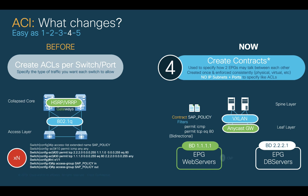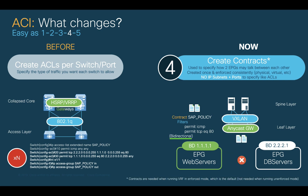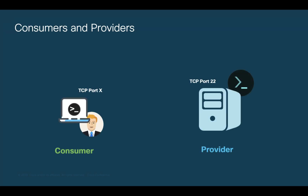ACI follows a whitelist model. Therefore, you need to define what you want to allow and the rest is denied automatically. Contracts are bidirectional by default; however, you could specify different filters for each direction if needed. In ACI, we define the direction of the traffic by specifying source and destination EPGs, which are known as consumer and provider respectively. Consumer is who initiates the connection and provider is who receives it.